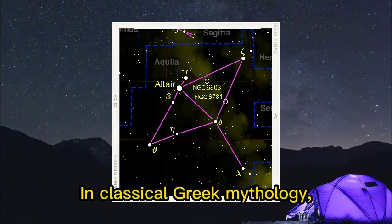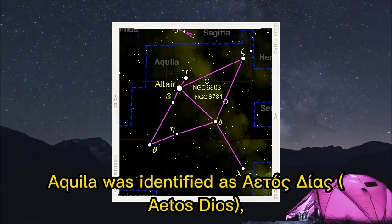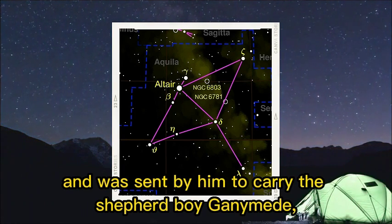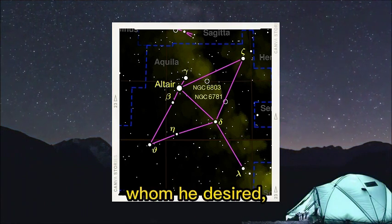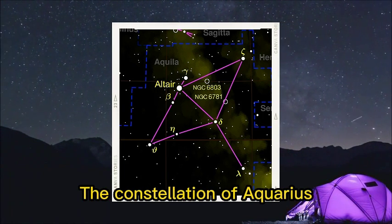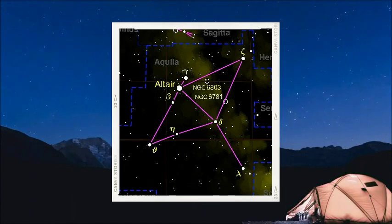In classical Greek mythology, Aquila was identified as Aetos Dios, the eagle that carried the thunderbolts of Zeus and was sent by him to carry the shepherd boy Ganymede, whom he desired, to Mount Olympus. The constellation of Aquarius is sometimes identified with Ganymede.